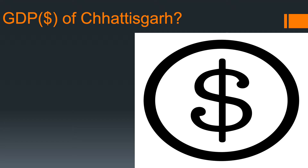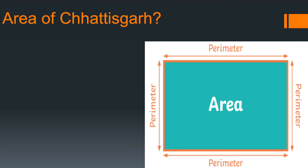Next: what is the GDP of Chhattisgarh in dollars? Answer: 48 Billion US Dollars. Next: what is the area of Chhattisgarh? Answer: 1.35 Lakh Kilometer Square, ranking 9th in India.